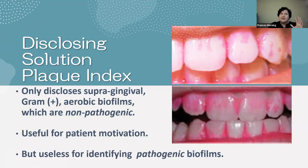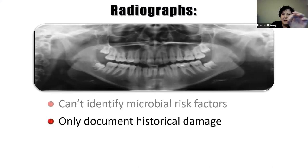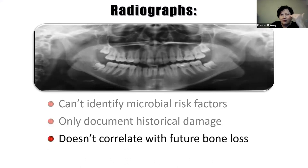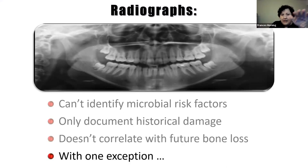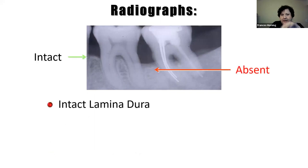Plaque will eventually go subgingival, and the bacteria can modulate its environment and change it to a very oxygen-deprived environment. It's important to know what's going on above, but at that moment I don't know what's happening underneath — I need something more. Radiographs don't show me any microbial risk; they only document historical damage. If I see vertical or horizontal bony defects, the damage is already done. As a preventive specialist and biological hygienist, I want to prevent disease, not treat symptoms of disease.